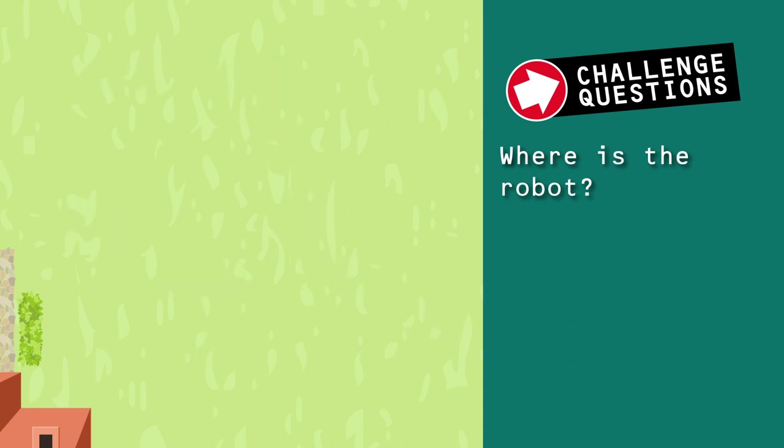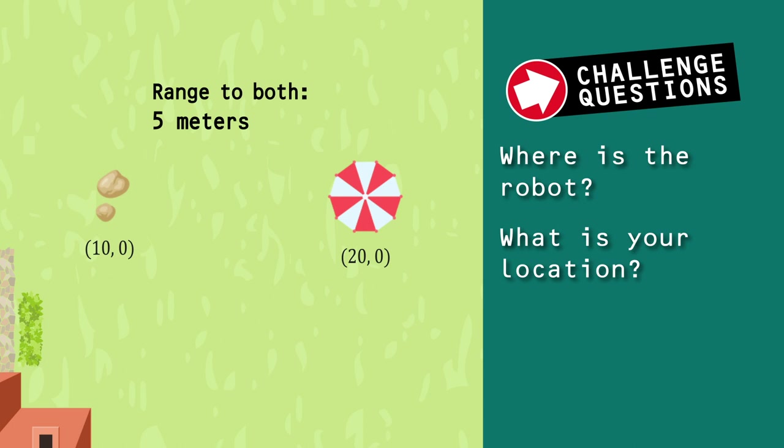For our second question, imagine the robot only sees two landmarks: a pile of rocks and an umbrella. The rocks are at the position (10, 0), and the umbrella is at the position (20, 0). The distance to the rocks is 5 meters, and the distance to the umbrella is also 5 meters. Can you still determine the position of the robot, even though there are only two landmarks? Again, you are 5 meters from two landmarks: rocks located at (10, 0) and an umbrella located at (20, 0). Can you determine your position with only two landmarks?